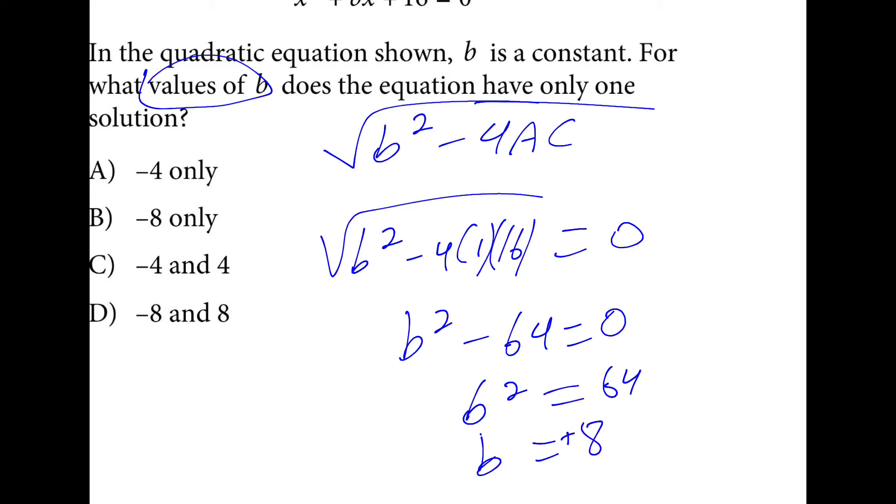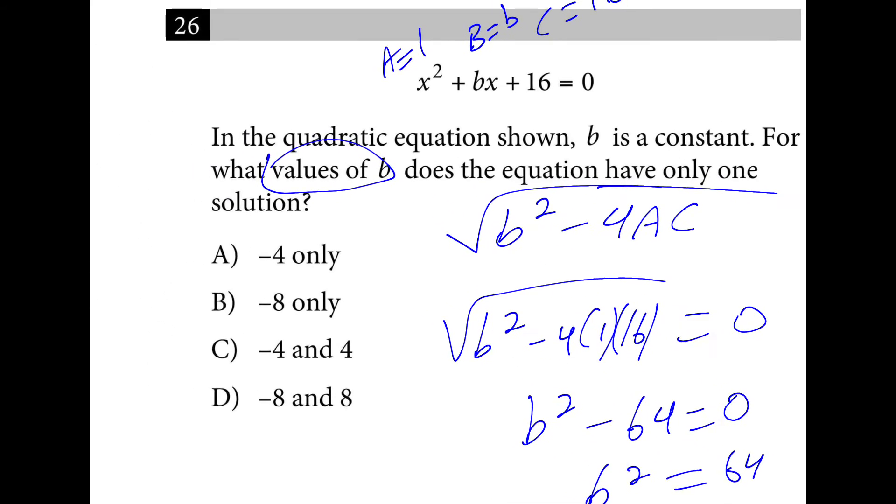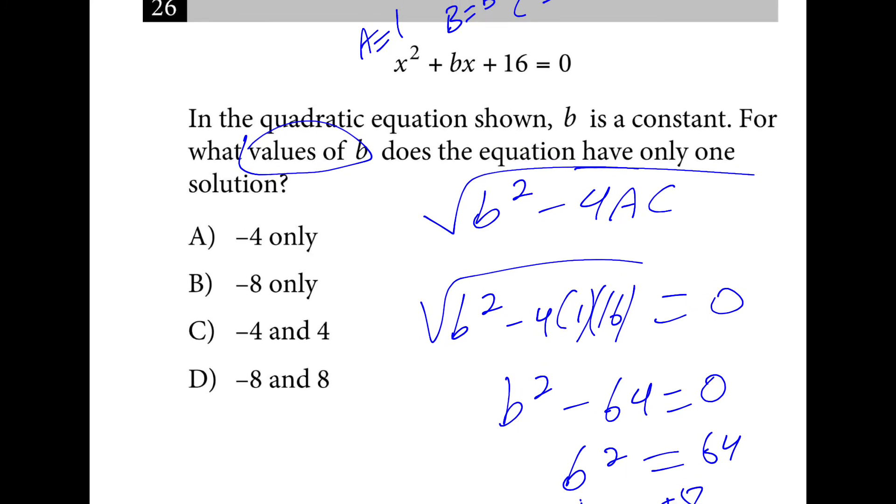Now this could be plus or minus eight, so we could test both of the original answers, or both answers in the original equation. And depending on if this was eight or negative eight, this would be written as x plus four times x plus four, or x minus four times x minus four. In both cases, there's still only one answer, so they both work.